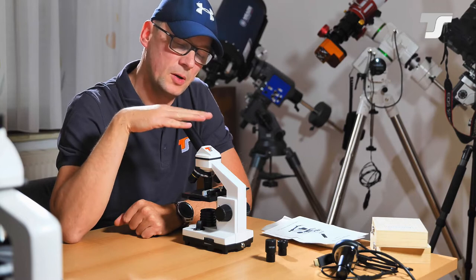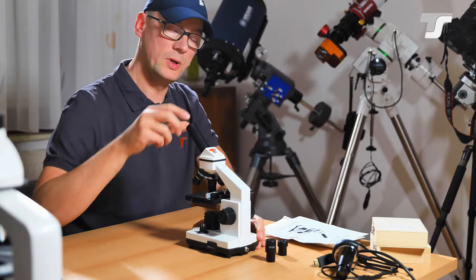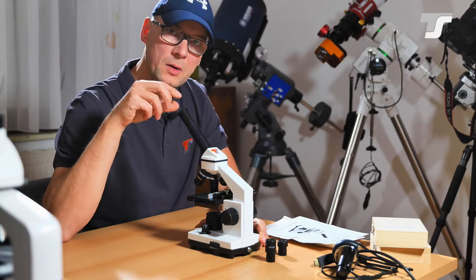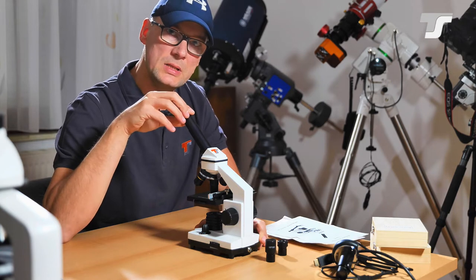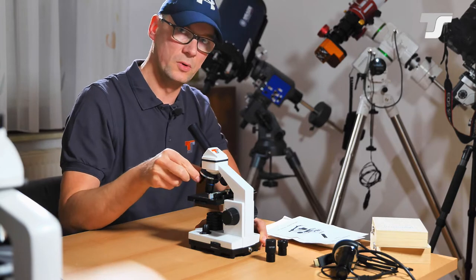Starting from the top going down to the bottom. So the first thing I already showed you is this drawer tube here. It's some sort of Barlow element that you can use to change the magnification in addition to rotating the revolver.